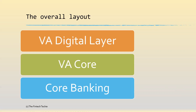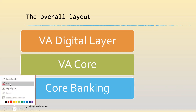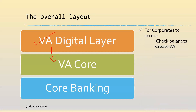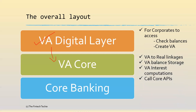When the corporates create the virtual accounts at the digital layer, the virtual accounts get created in the VA core. The digital layer is for corporates to access, to check balances, to take statements, to create virtual accounts. The VA core is used to link the virtual account to the real account, to store the balances of the virtual account. And also for interest computations, it has its own interest and charges batch which does the interest computation. Finally, it calls the API to the DDA to update the balance of the real accounts.